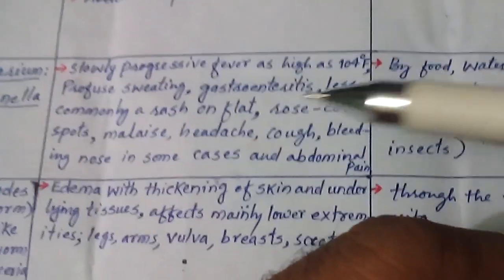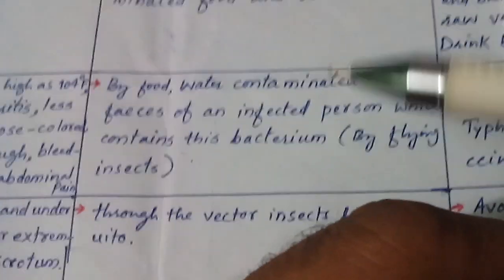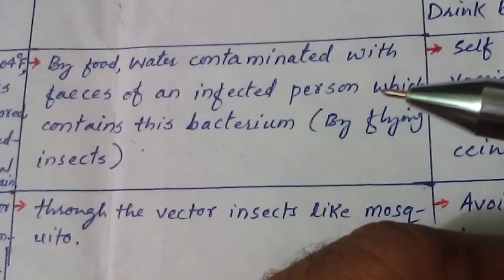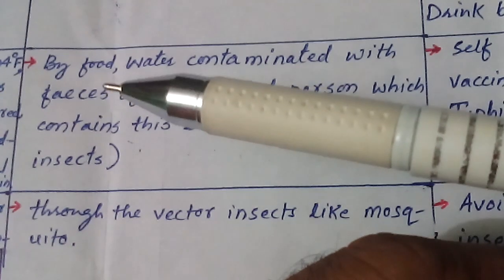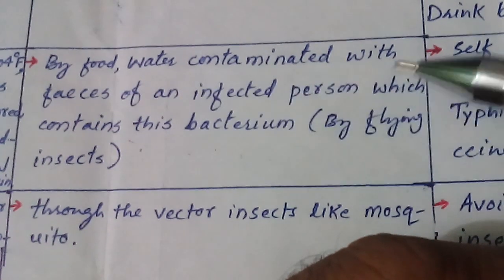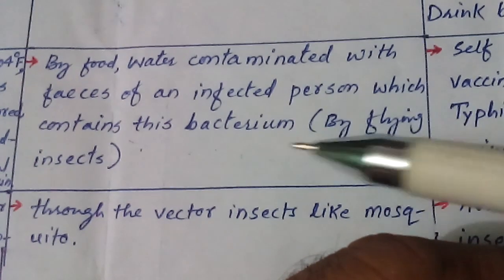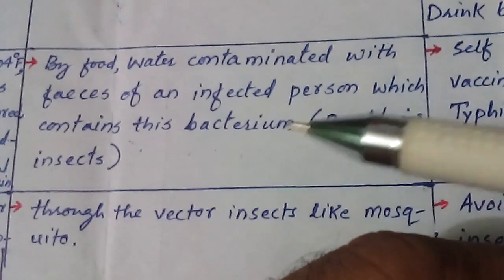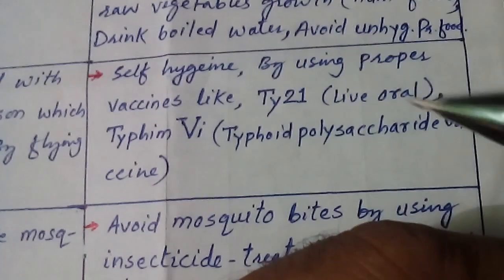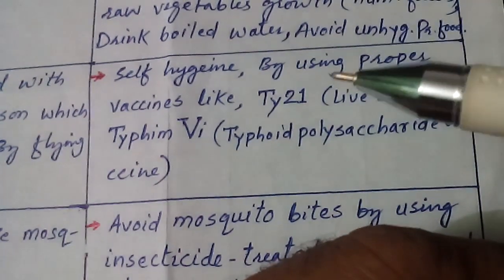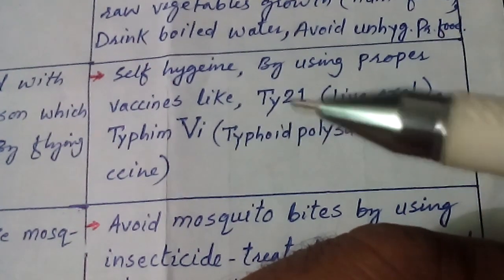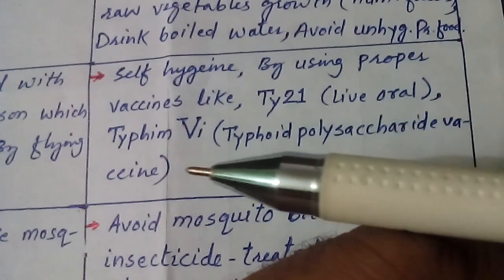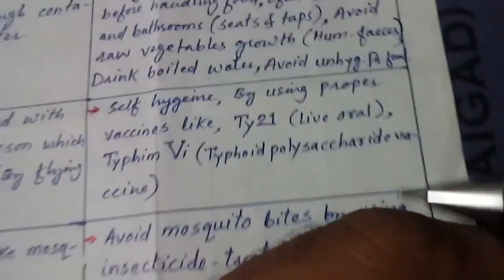The mode of transmission for typhoid involves food and water contaminated with the feces of an infected person containing the bacterium, as well as flies and insects. Prevention measures include self-hygiene and using proper vaccines such as the Ty21a live oral vaccine and the Typhoid Vi polysaccharide vaccine. Using these vaccines can prevent this disease.